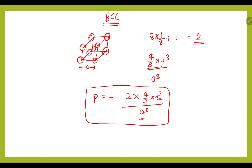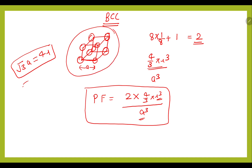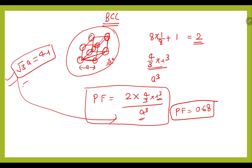We need the relationship between a and r for BCC, which is √3·a = 4r. This can be proved using the body diagonal: first determine the face diagonal length which is √2·a, then applying the Pythagorean theorem yields √3·a = 4r. After substituting this relationship into the packing factor formula, you get 0.68.